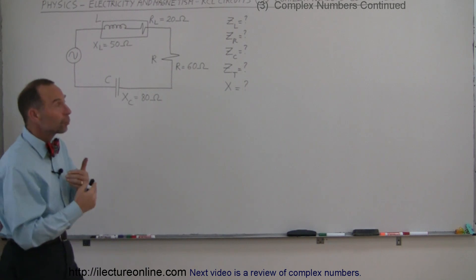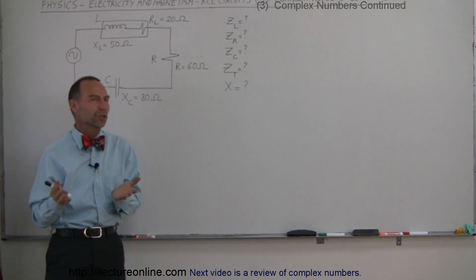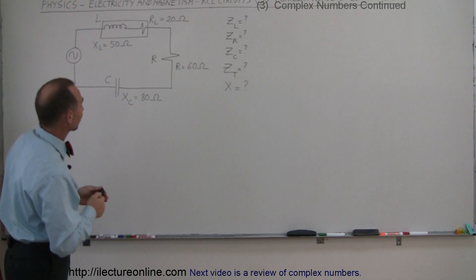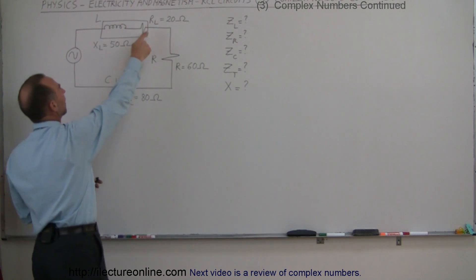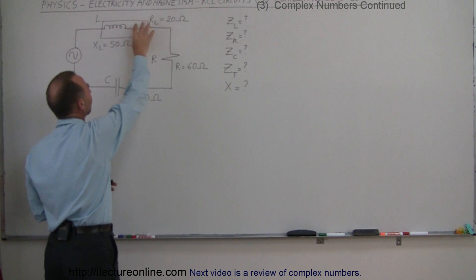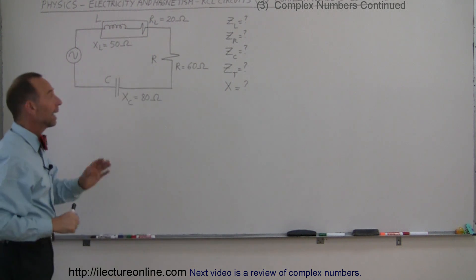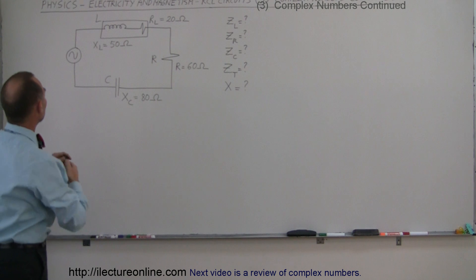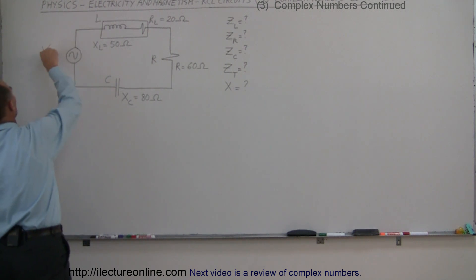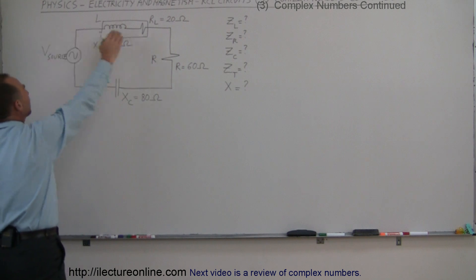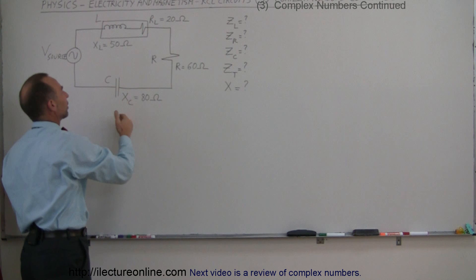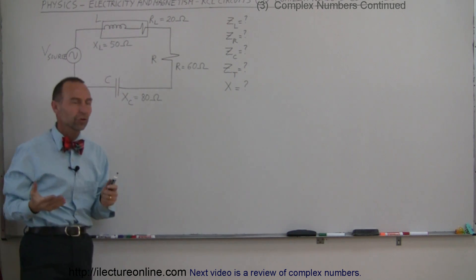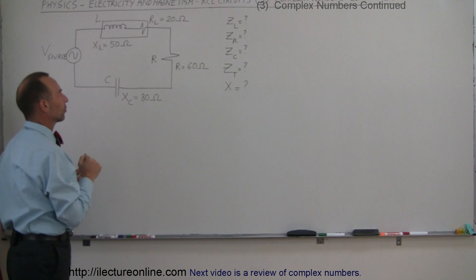Here we're going to continue trying to understand what complex numbers have to do with RCL circuits. RCL circuits have inductors, resistors, and capacitors. An inductor usually has some associated resistance with it, and usually they're hooked up to a varying voltage source. The opposition to the current created by the source is reacted to by the inductor and the capacitor, and this opposition is typically called reactance.